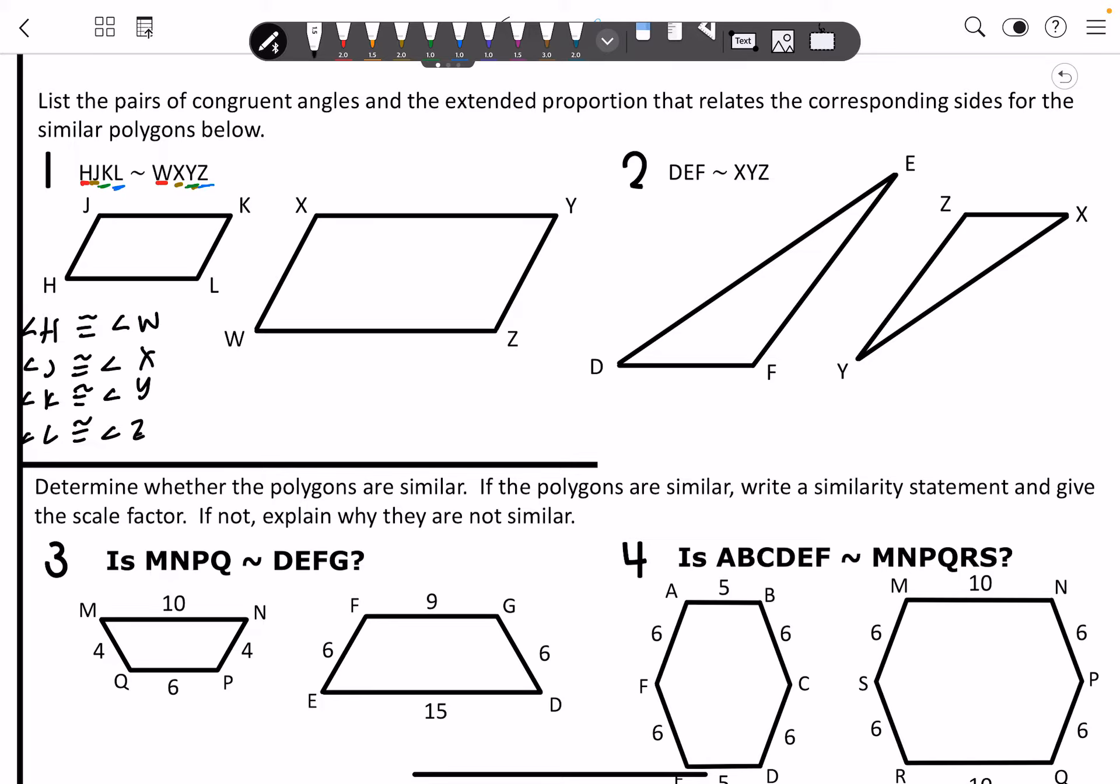The next are your similarity statements. So we're going to do H, J, K, L. Pass it up. J, K, L, H. And that's going to be similar to W, X, Y, Z. Move it up. X, Y, Z, W.